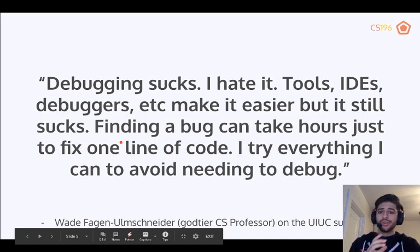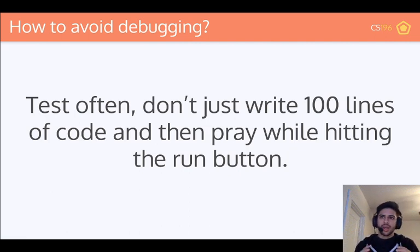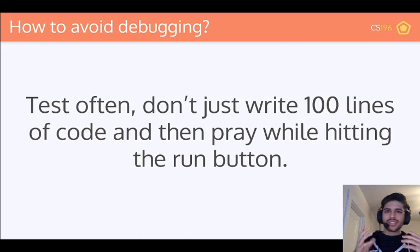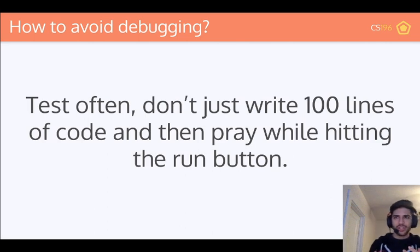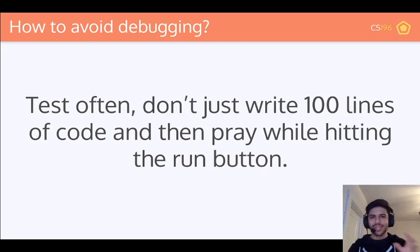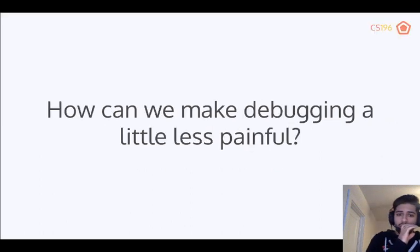Today we'll go through some tips and tricks, but first I want to touch on what he said at the end: 'I try everything I can to avoid needing to debug.' This isn't a software design class, but before we touch on how to debug, let's talk about how to avoid debugging. The way you can avoid debugging is just by testing your code often. Every small piece of functionality that you implement, make sure you test it before you move on to the next one. Don't just write a hundred lines of code and then hit run and pray. Make sure incrementally, every step along the way, your outputs are looking right and your code is doing what you want it to do.